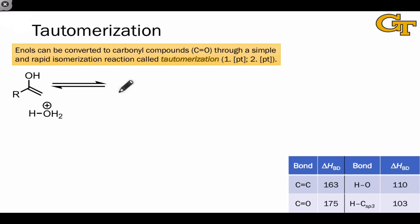The process that converts enols into carbonyl compounds, such as ketones, is referred to as tautomerization. The keto and enol forms are constitutional isomers, but this particular type of relationship in which the only difference between the structures is the movement of a hydrogen from a heteroatom to carbon is called tautomerism, and the molecules are referred to as tautomers of one another.